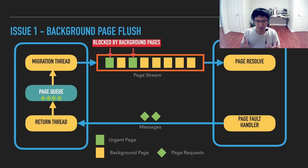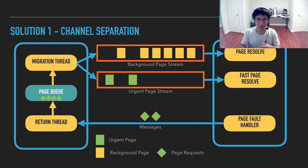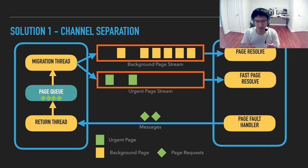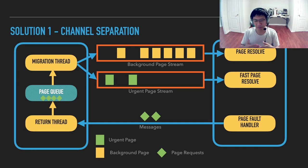What we can do is directly separate the channel: one channel only sends background pages, and if there are urgent pages, we use another channel. To make it even better, we have a fast page resolve thread on the destination just to resolve page faults. This needs some rework on the migration logic, because currently we have a lot of global state to maintain RAM information. But after this change, page fault latencies can be greatly reduced. This is the first issue we are tackling.